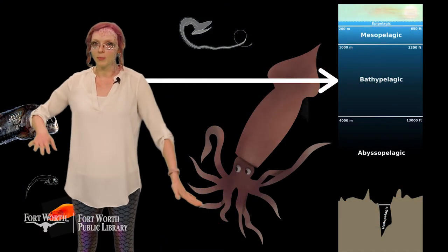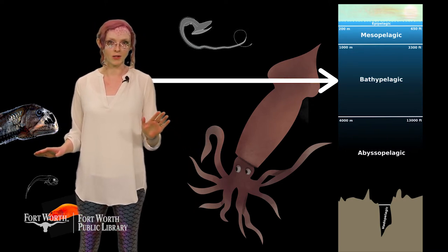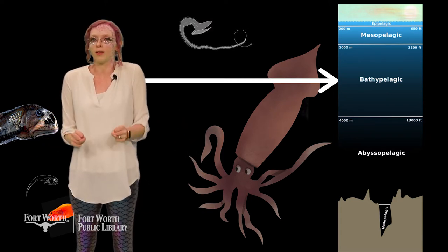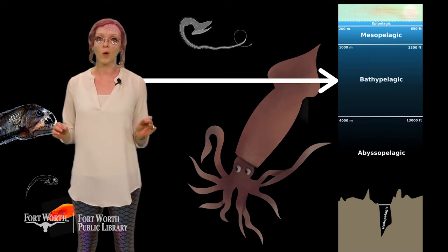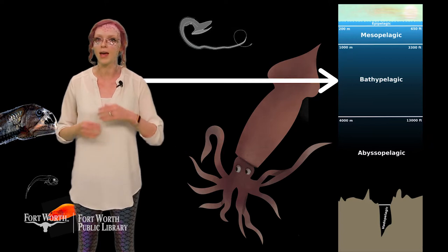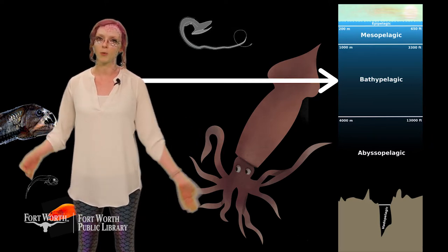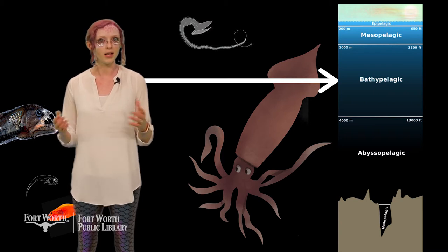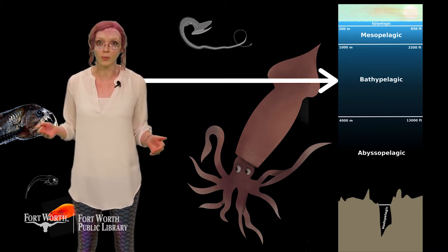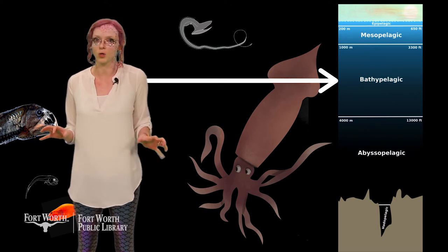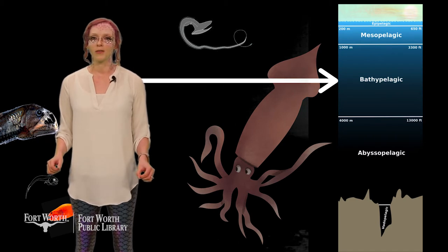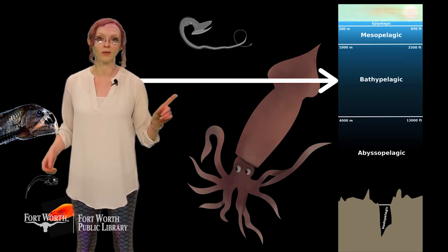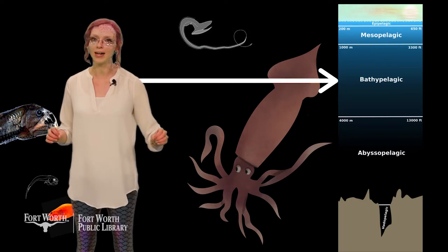Now we've entered the bathypelagic zone, also known as the midnight or aphotic zone. This zone is so deep and dark, it basically only has one temperature — it stays right around a bone-chilling 39 degrees Fahrenheit or 4 degrees Celsius. The water column above is so tall that no light at all can reach this level of the sea. This zone extends from about 1,000 meters to 4,000 meters in some places. There are plenty of strange creatures you might encounter, such as the rat-tail fish, the gulper eel, the fang fish, and the velvet whale fish. The largest toothed whale, the sperm whale, hunts all the way down to 3,280 meters for food.